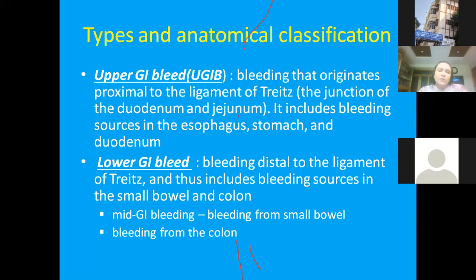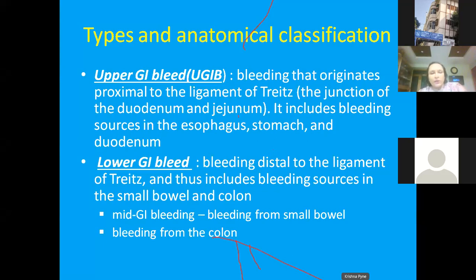Lower gastrointestinal bleeding refers to bleeding distal to the ligament of Treitz, including sources in the small bowel and colon. Some people divide this further into mid-GI bleeding and true lower GI bleeding — mid-GI bleeding arises from the small bowel, while true lower GI bleeding comes from the colon.